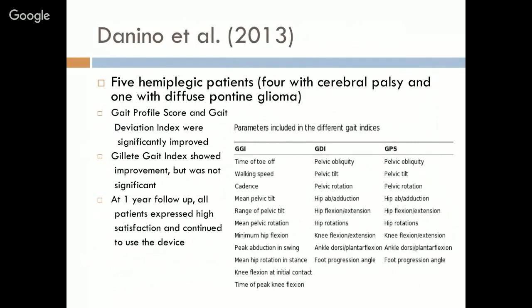A 2013 study looked at five hemiplegic patients — four with cerebral palsy and one with diffuse pontine glioma, with a mean age of 16.5 years. Using gait indices — gait profile score, gait deviation index, and gait gait index — both the gait deviation index and gait profile score significantly improved. The gait gait index showed improvement but was not significant. At one-year follow-up, patients expressed high satisfaction.